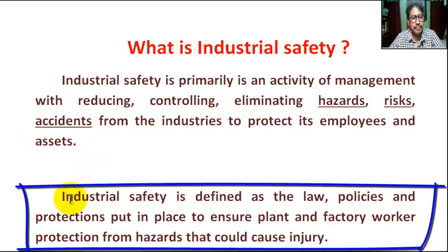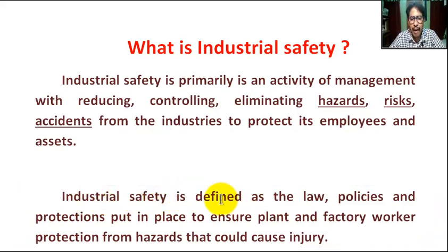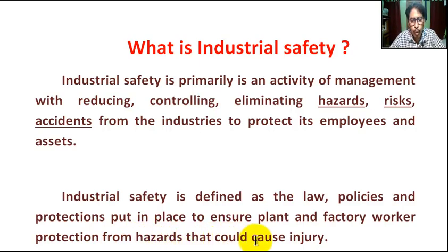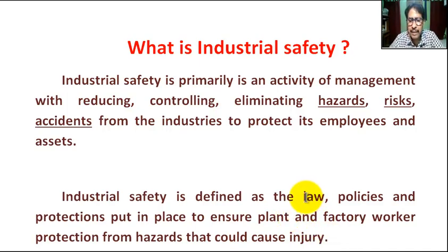Another definition: industrial safety is defined as the laws, policies, and protection put in place by the industry to ensure plant and factory worker protection from hazards that could cause injuries. It is the company's law, policy, and protection.